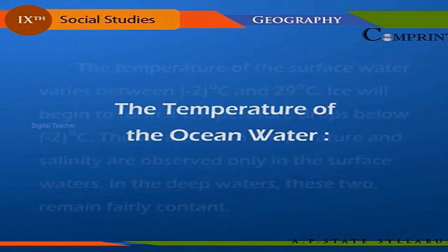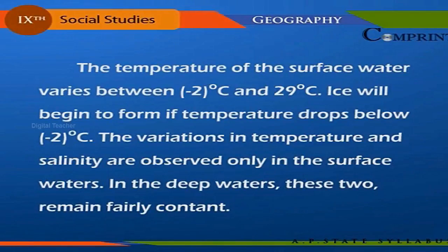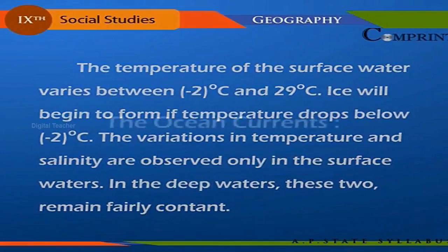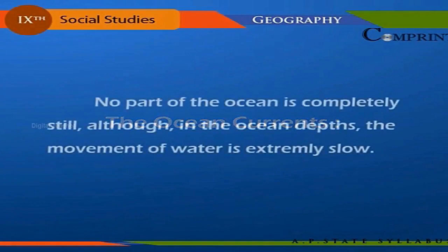The temperature of the surface water varies between minus 2 degrees Celsius and 29 degrees Celsius. Ice will begin to form if temperature drops below minus 2 degrees Celsius. The variations in temperature and salinity are observed only in the surface waters; in the deep waters, these two factors remain fairly constant.